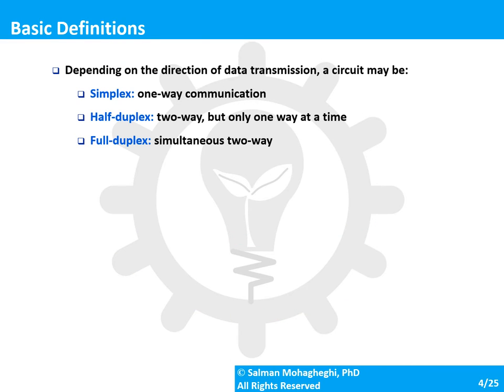A very important aspect of a circuit is the direction in which it can transmit data. Based on the direction of data transmission, a circuit can be simplex, half-duplex, or full-duplex. Simplex is a circuit that allows for one-way communication only — data transmission goes only from the sender to the receiver.